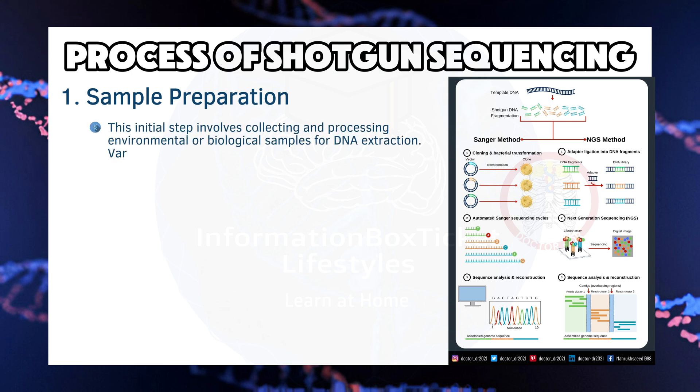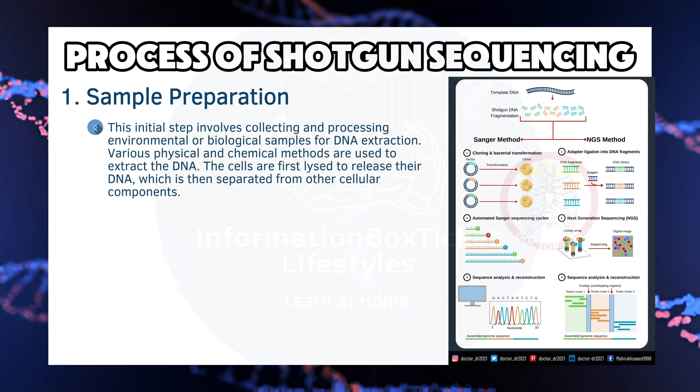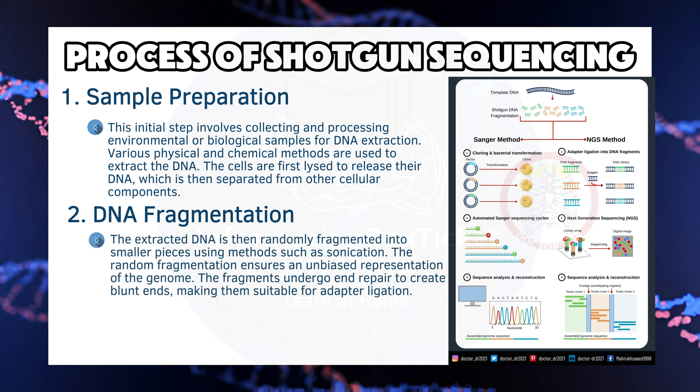Step 1 — Sample Preparation: This initial step involves collecting and processing environmental or biological samples for DNA extraction. Various physical and chemical methods are used to extract the DNA. The cells are first lysed to release their DNA, which is then separated from other cellular components. Step 2 — DNA Fragmentation: The extracted DNA is then randomly fragmented into smaller pieces using methods such as sonication. The random fragmentation ensures an unbiased representation of the genome. The fragments undergo end repair to create blunt ends, making them suitable for adapter ligation.